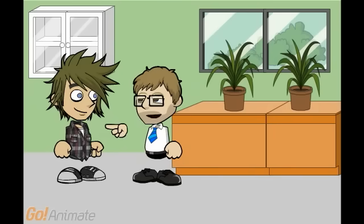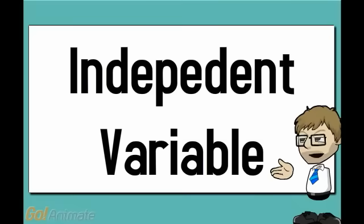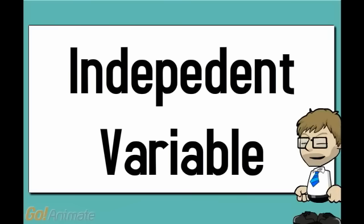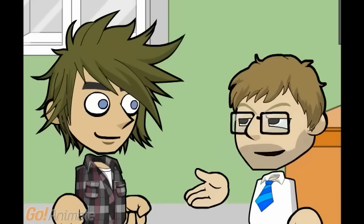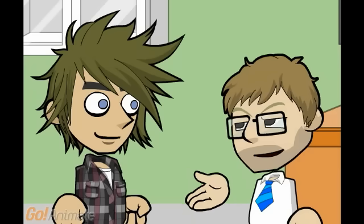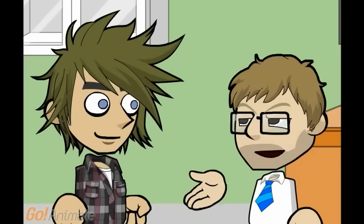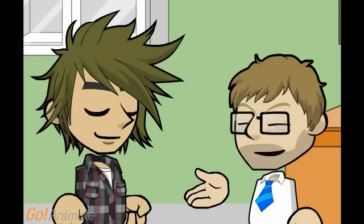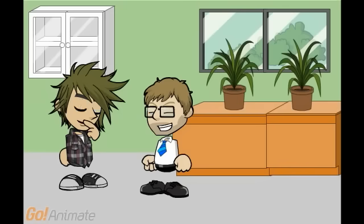You got it, buddy. In order for an experiment to be fair, you can only change one thing at a time. Everything else in the experiment should stay the same. In your experiment, the thing that you change is called the independent variable. In order for a test to be fair, you must always only have one independent variable. And remember, that's the thing that you're going to change. In our case, it was the amount of water that the plants received.